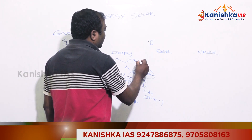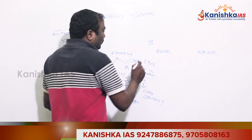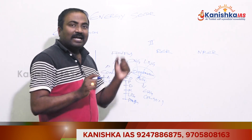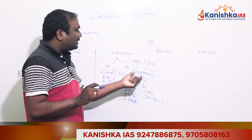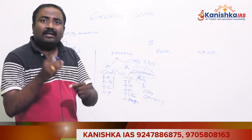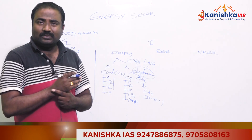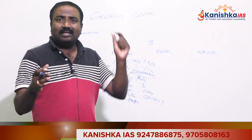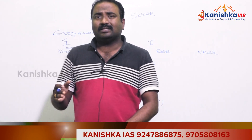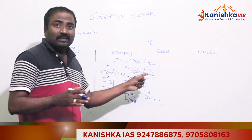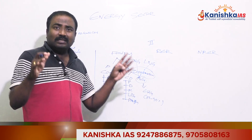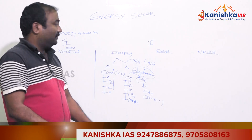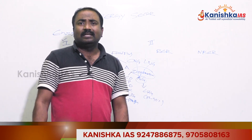Natural gas is processed into CNG (compressed natural gas) and LNG (liquefied natural gas) for transportation purposes. LNG is formed by cooling natural gas to about -260 degrees Fahrenheit. CNG is produced by compressing natural gas under high pressure. Both CNG and LNG are very important forms of natural gas for practical use.